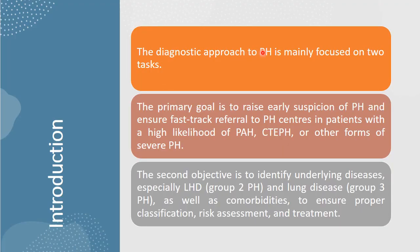The diagnostic approach to pulmonary hypertension is mainly focused on two tasks. The primary goal is to raise early suspicion of pulmonary hypertension and ensure fast-track referral to pulmonary hypertension centers in patients with high likelihood of pulmonary arterial hypertension, chronic thromboembolic pulmonary hypertension, or other forms of severe pulmonary hypertension. The second objective is to identify the underlying disease, especially left heart disease and lung disease, as well as comorbidities, to ensure proper classification, risk assessment, and treatment.